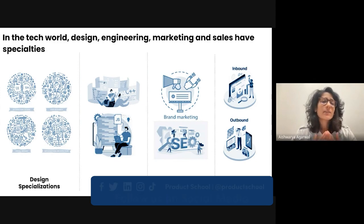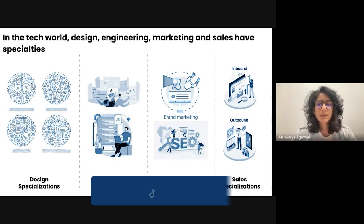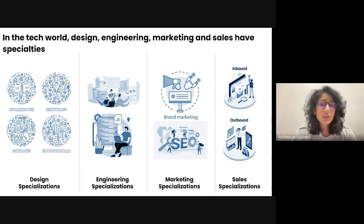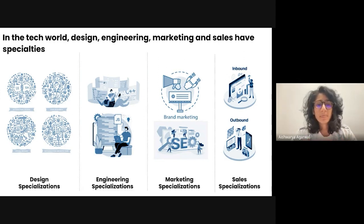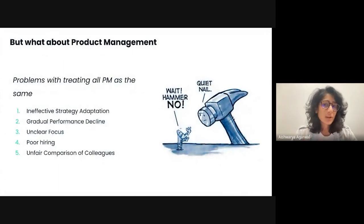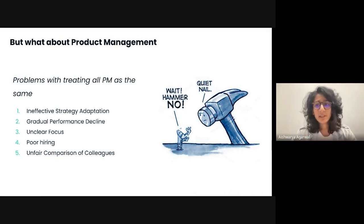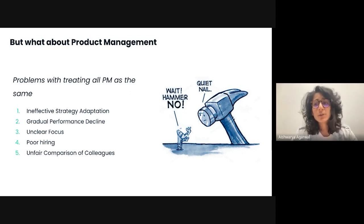It's only lately that I have started to see AI product management and growth product management emerge. There are also mentions of payments product manager, and even zero to one product manager has come up in certain job descriptions. This is headed in the right direction, but there's still not a lot of understanding of what these PM roles mean and how each of them is unique and how each specialization can help at different stages of the company. So overall, in today's tech world, design, engineering, marketing, and sales have specialties — but what about product management? It's like the hammer and nail problem. When you have a hammer, everything looks like a nail, and this is a fundamental issue with treating all product management the same.